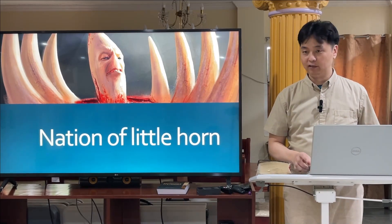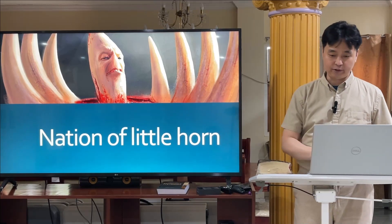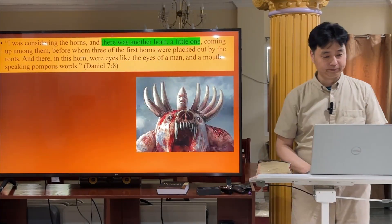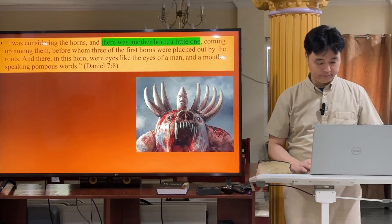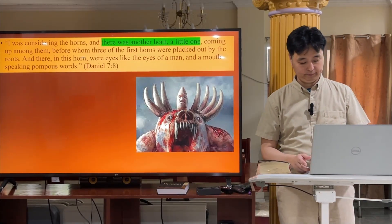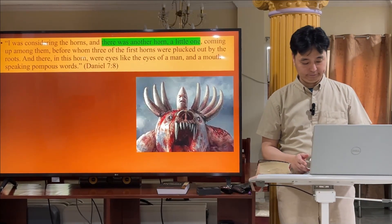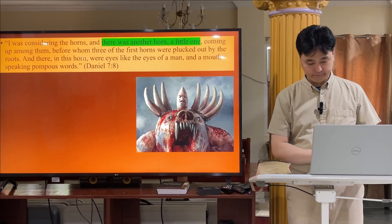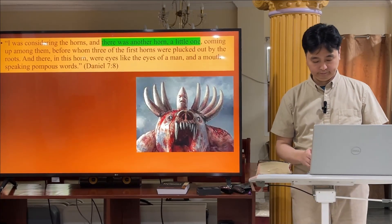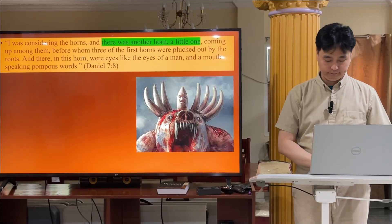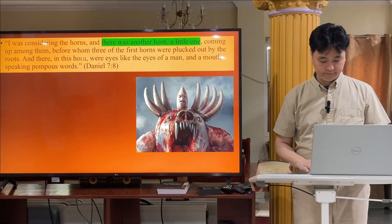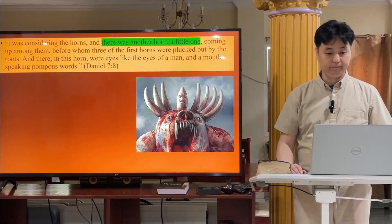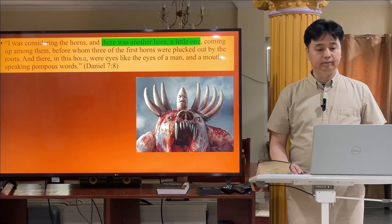Actually, king — king or country. Let's read it together: 'I was considering the horns, and there was another horn, a little one, coming up among them, before whom three of the first horns were plucked out, and there in this horn were eyes like the eyes of a man, and a mouth speaking pompous words.'